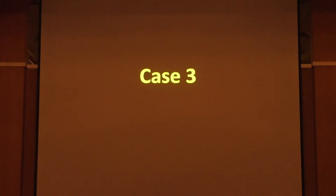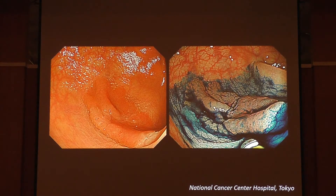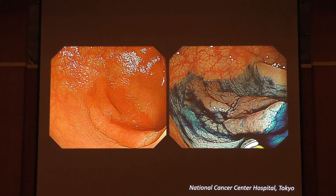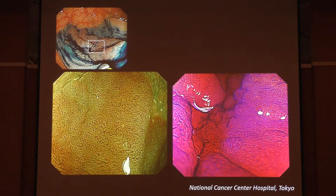Case 3. Here is the white light imaging and indigo carmine dye spraying. With this kind of lesion, detection is really important — we must first detect and then carefully evaluate every detail. The next pictures are magnified NBI and chromoendoscopy with magnification.